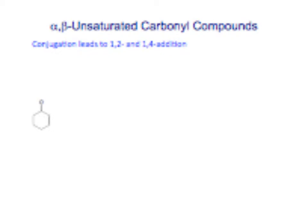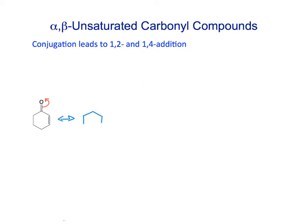The last topic is alpha-beta unsaturated carbonyls. When we add a double bond conjugated to the carbonyl, we have resonance and conjugation that spread out the positions where reactions can occur. The main resonance we've already discussed for the carbonyl describes the reactivity: the delta-plus on the carbonyl carbon comes from moving the pi electrons up onto the oxygen, giving a minus on oxygen and a plus on the carbonyl carbon.